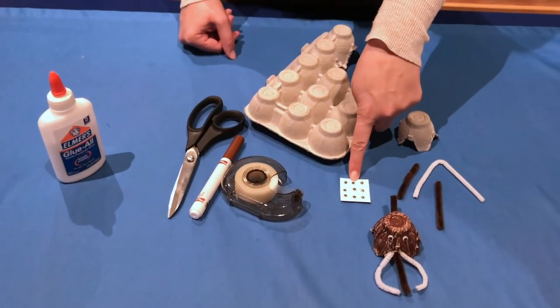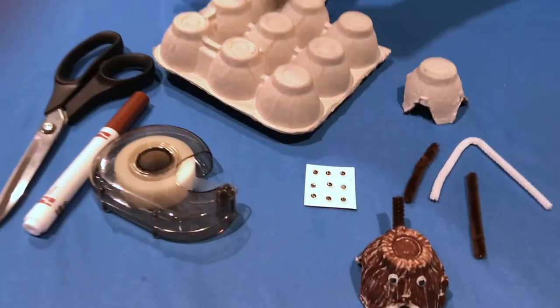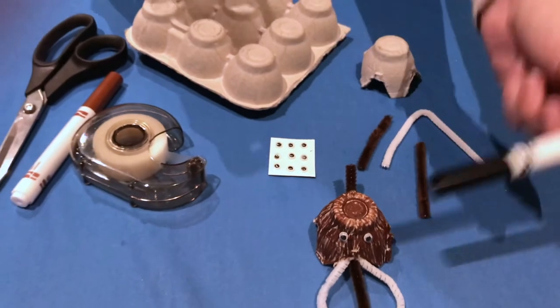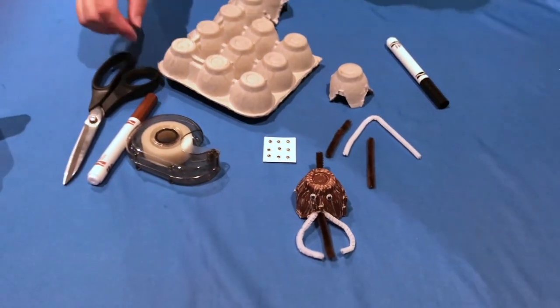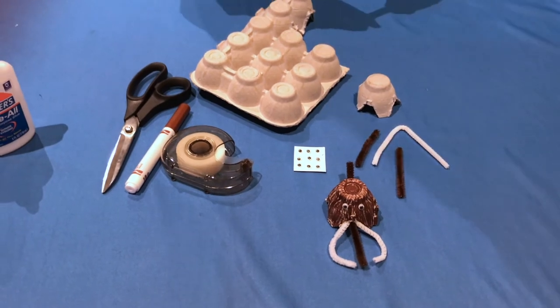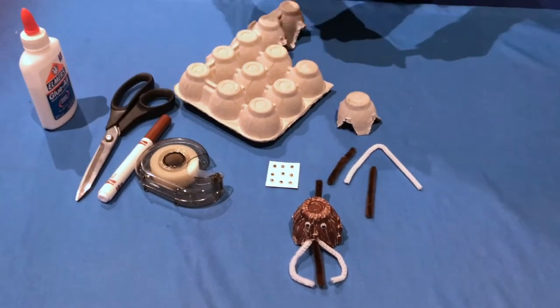If you don't have googly eyes at home just take one of your markers. We have this black one here. And you can just draw little eyes on. Tape and scissors to cut your egg carton. And you might want your glue for this project.